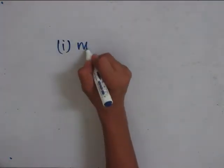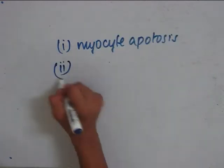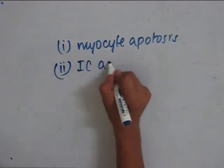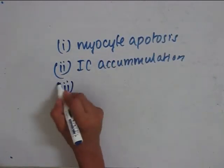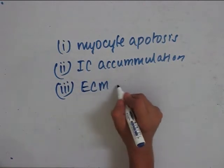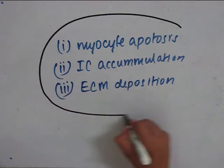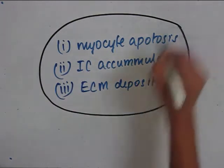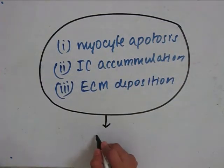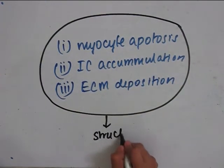All three mechanisms may be sufficient, but there are some degrading effects also, like myocyte apoptosis, intracellular accumulation, and extracellular matrix deposition. All these factors, cumulatively, cause further structural and functional damage.